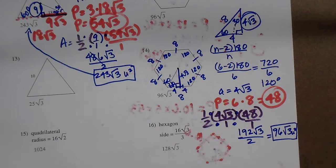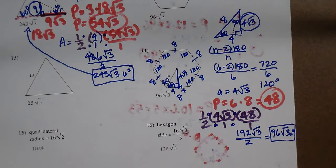And that's how you find the area of a polygon when you're given the radius and not the apothem.